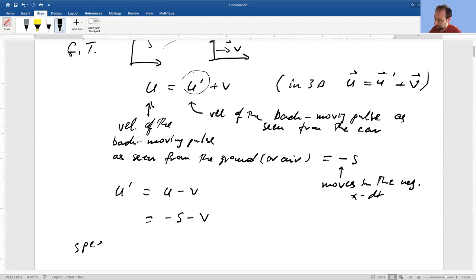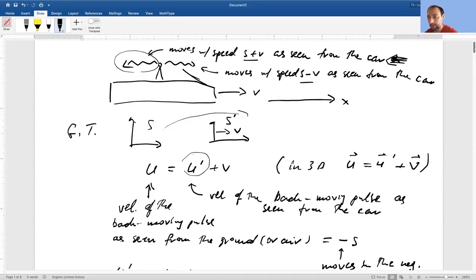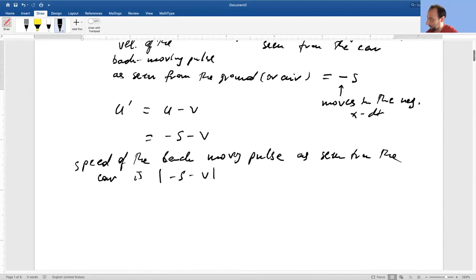And so the speed of the back moving pulse as seen from the car is absolute value of minus S minus V. And V is the velocity of the car as seen from the ground. And that's assumed to be a positive quantity. Assumed that car is moving in the positive X direction. That's how we define the X direction, the direction in which the car is moving. So velocity of the car is plus V or just V. So this is S plus V. Both of these are defined to be positive.